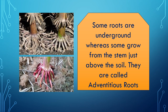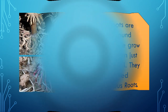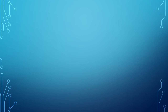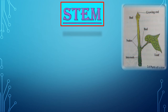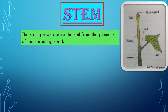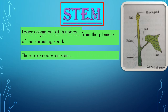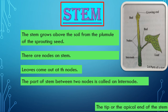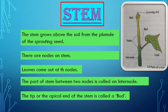The next topic is stem. The stem grows above the soil from the plumule of the sprouting seed. There are nodes on the stem; leaves come out at the nodes. The part of the stem between two nodes is called an internode. The tip or apical end of the stem is called the bud. You can see on your screen the apical part which is the growing end — the bud, leaf, nodes, and internodes.